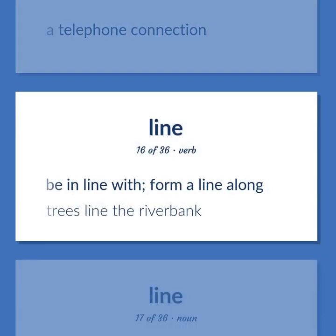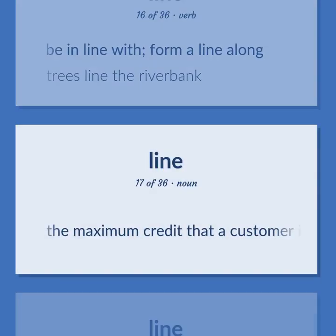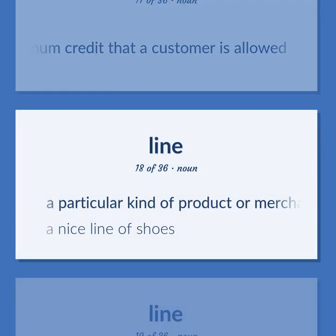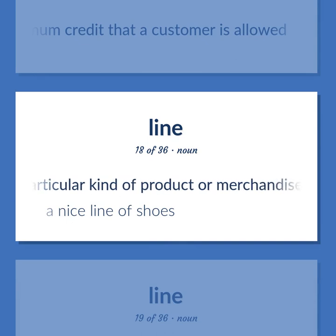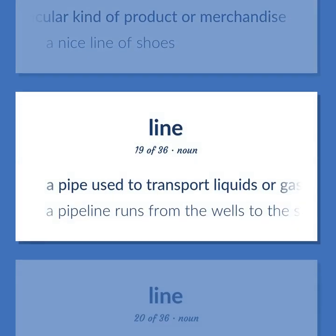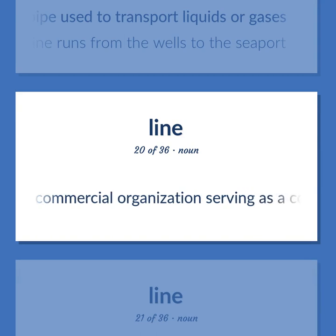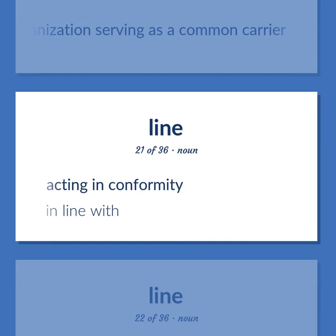Line: a telephone connection. Be in line with, form a line along. Example: trees line the riverbank. The maximum credit that a customer is allowed. A particular kind of product or merchandise. Example: a nice line of shoes. A pipe used to transport liquids or gases. Example: a pipeline runs from the wells to the seaport. A commercial organization serving as a common carrier. Acting in conformity — in line with.